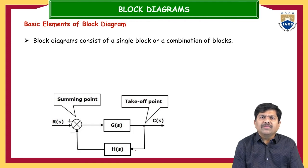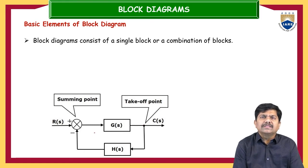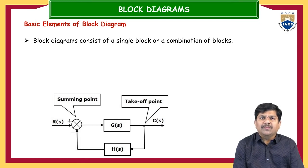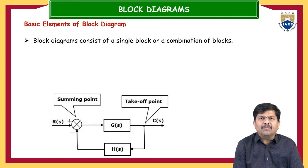That tapped information we are giving to another block, that is with H(S). This is about the takeoff point. One more point is the summing point. Suppose at any instant of time two signals are approaching each other — we cannot simply add those two signals together. One of them may be positive and one may be negative. In such cases, we add the two signals to a summing point, which simply sums the two signals approaching that particular point.